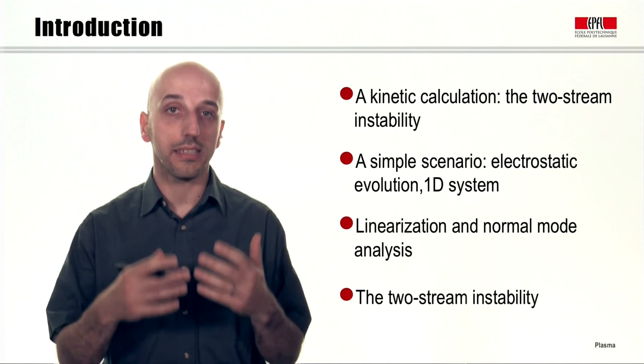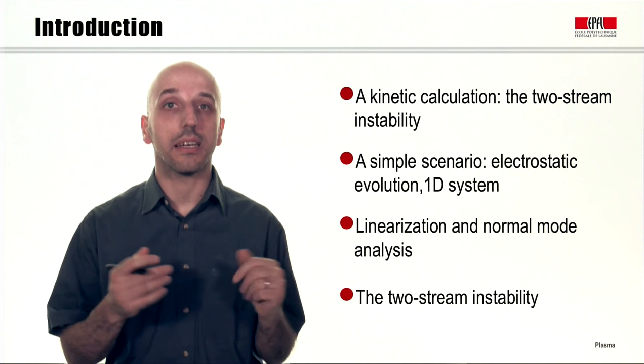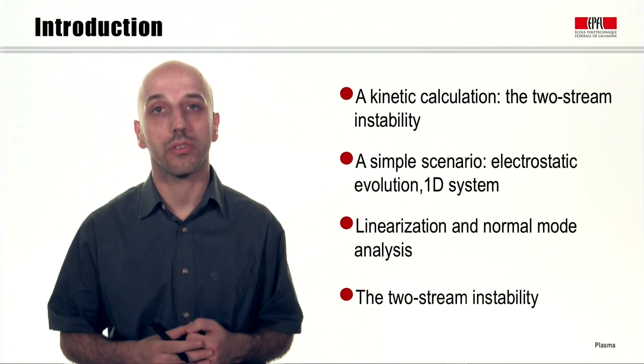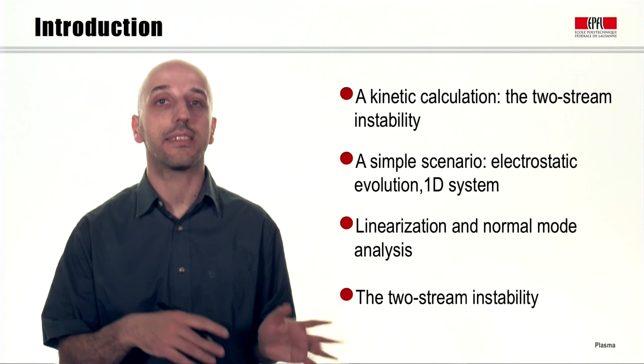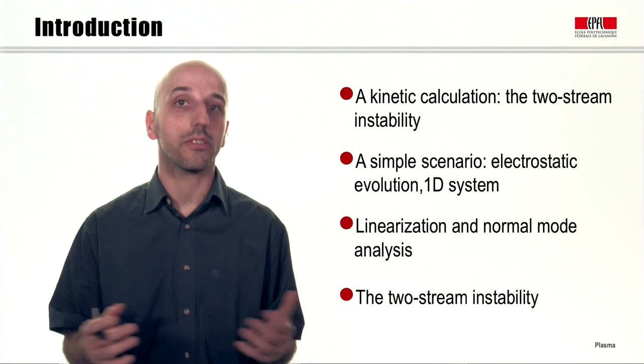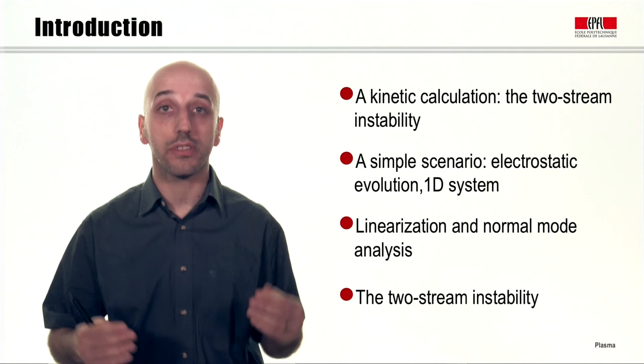In order to do this calculation, we will first simplify the system of equations that we have introduced in the past module to consider one-dimensional electrostatic evolution. Then we will introduce some techniques — linearization and normal mode analysis — that will be useful throughout the course. Finally, we will focus on the actual calculation of the stability of these two counter-streaming beams.